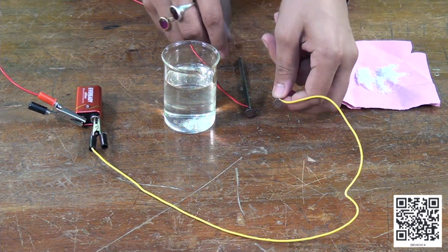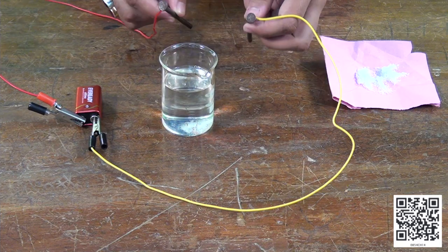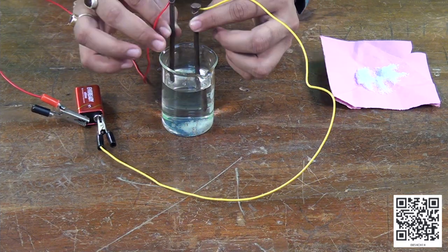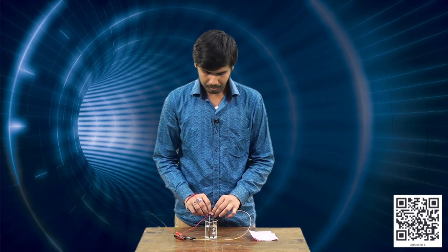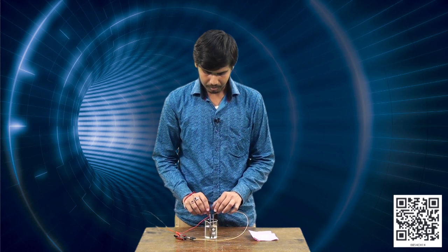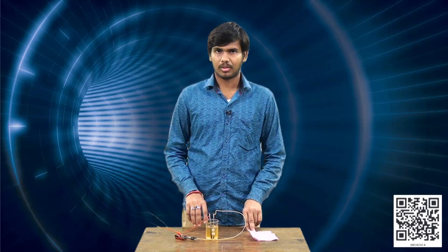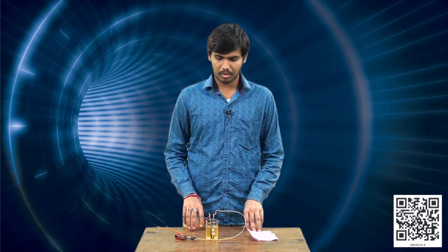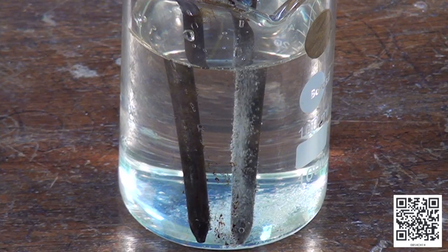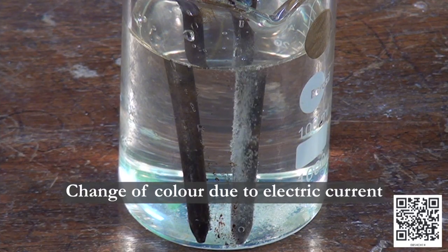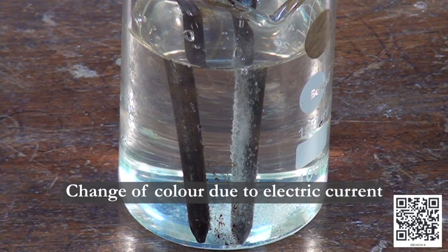Now we will put these two iron nails inside distilled water. Make sure the wires are outside the beaker, wait for 3 to 4 minutes and observe the electrodes carefully. Are you able to see bubbles on the electrodes?